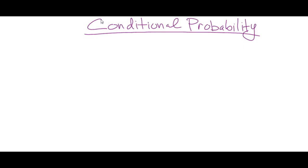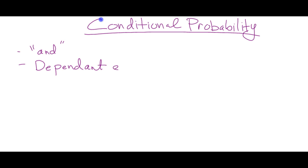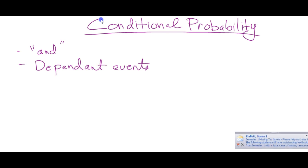Conditional probability. We've done probability with the use of the word 'or'; this uses the word 'and.' Conditional means that it depends on something — depends on certain conditions — so we call these dependent events. A key word you will usually see in dependent events is 'without replacement.'